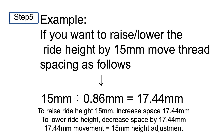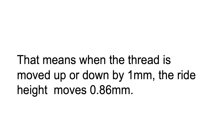So in a nutshell, for one millimeter adjustment, it moves the height by 0.86 millimeters. So if you want to figure out how to lower or raise your ride height by a certain amount in millimeters, just remember: one millimeter equals 0.86 millimeters in ride height adjustment.